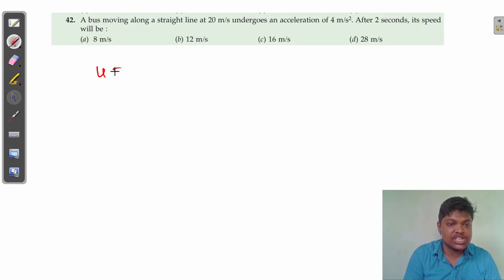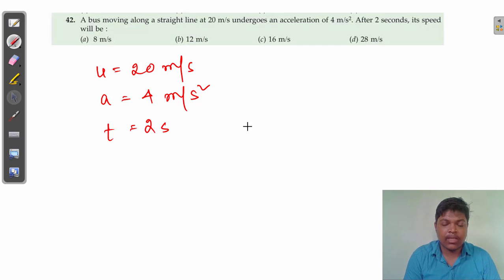So the initial speed of the bus, that is u, is 20 meters per second. The acceleration is given as 4 meters per second squared, and the time is given as 2 seconds. We have to find out the final speed.